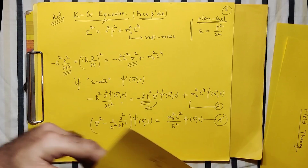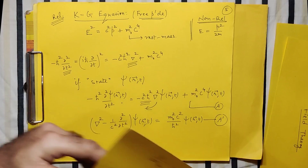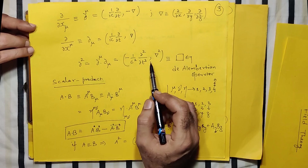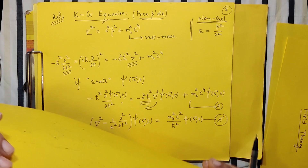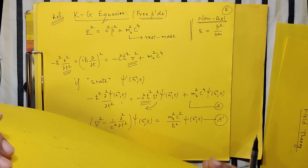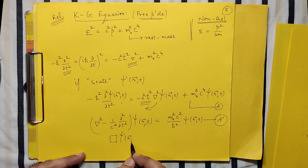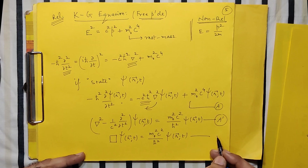Recalling the differential operator from our earlier lecture: the D'Alembertian operator is defined as nabla² minus (1/c²) del²/del-t². Looking at the left side of our equation, we recognize it is precisely the D'Alembertian operator. So the equation can be written compactly as: □ psi(r,t) = (m₀²c²/h-bar²) psi(r,t), where □ denotes the D'Alembertian operator.